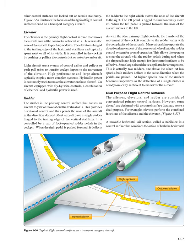Some large aircraft have a split rudder arrangement — actually two rudders, one above the other. At low speeds, both rudders deflect in the same direction when the pedals are pushed. At higher speeds, one of the rudders becomes inoperative as the deflection of a single rudder is aerodynamically sufficient to maneuver the aircraft. The ailerons, elevators, and rudder are considered conventional primary control surfaces.